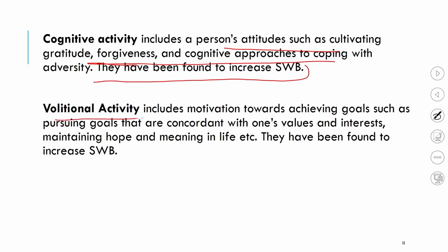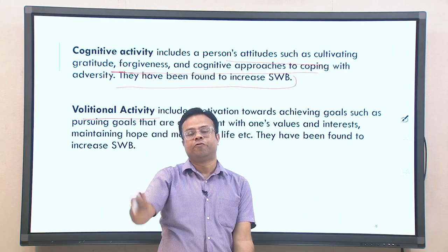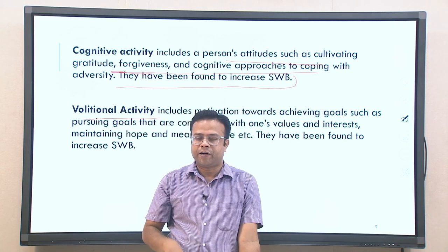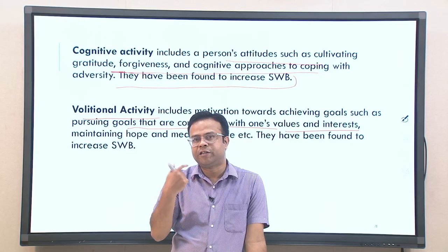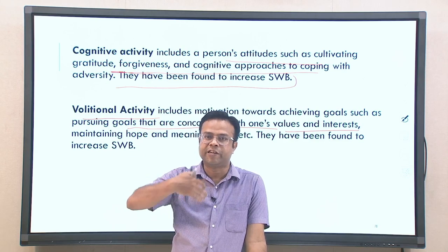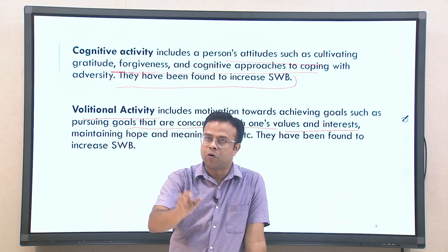The third category is volitional activities — these are motivational and goal-oriented activities. The kinds of goals we set for ourselves can enhance happiness. We have many goals in life and need motivation to fulfill them. Research shows that goals concordant with one's values and interests — goals we are genuinely interested in achieving and that align with our own value system — lead to enhanced happiness upon achievement. Intentional activities may be purely mental, physical, or goal-oriented.